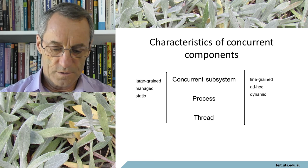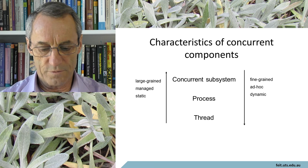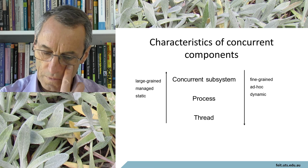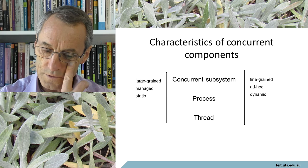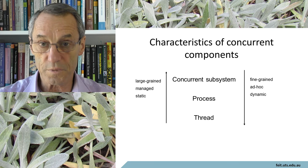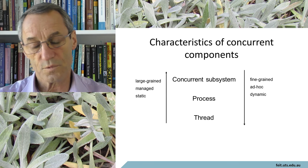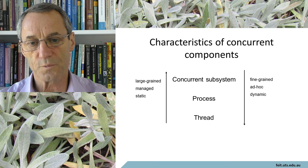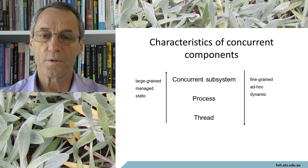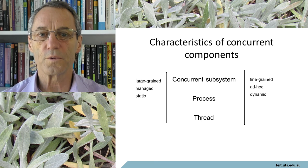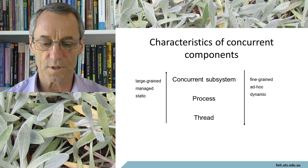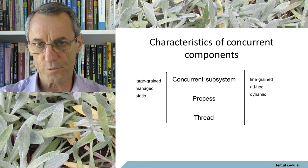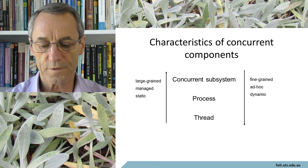Characterization of concurrent components: we have large-grain — the concurrent subsystem, which is obviously bigger than a process and usually has several processes. A process is a smaller unit, and a thread is a smaller unit of execution again. So we go from coarse grain to fine grain.